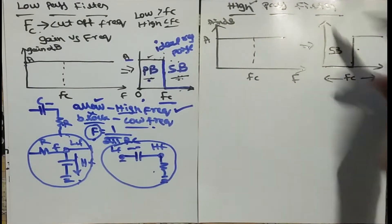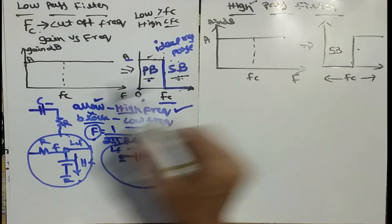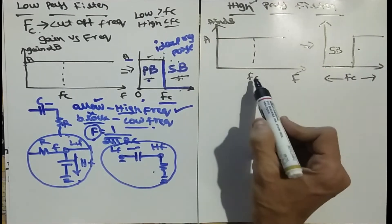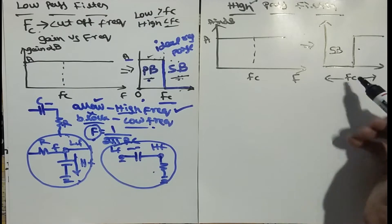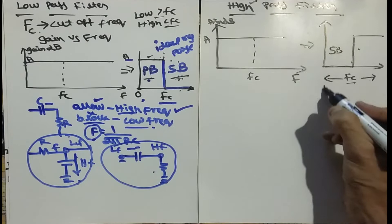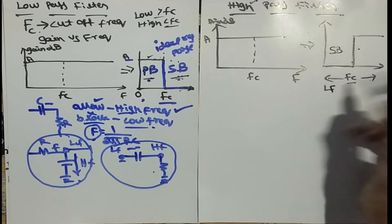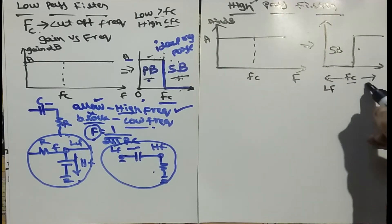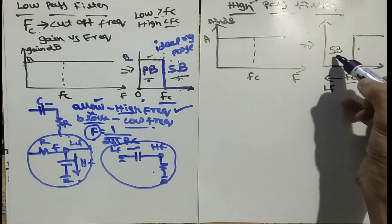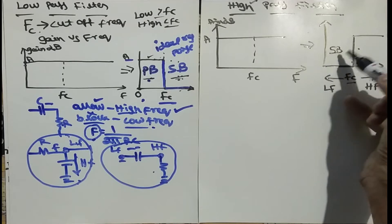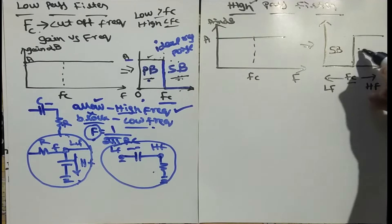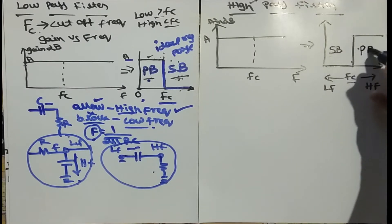Next we will discuss the high pass filter. The input signal is A in dB, with A and Fc as inputs. We have a cutoff frequency — below it is the low frequency area and above it is the high frequency area. In the high pass filter, the low frequency area is stopped or blocked, so we call it the stop band, and the high frequency area passes, so it is the pass band.